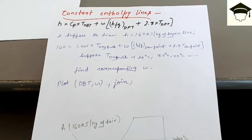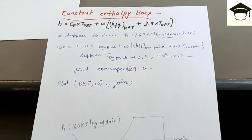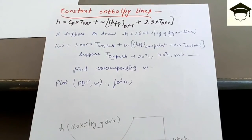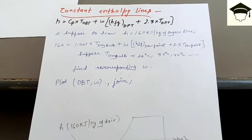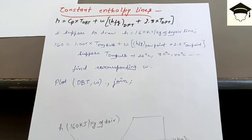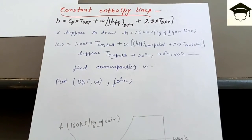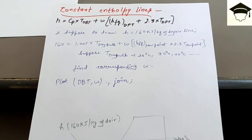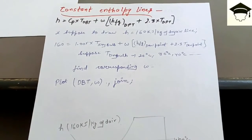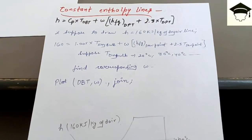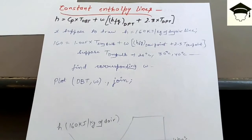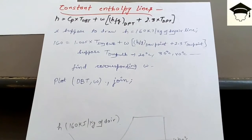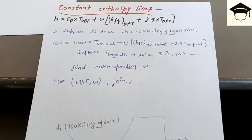All the links are given in the description at the end. If you want to see how to construct relative humidity lines, saturation lines, constant specific volume lines, and so on, you can check those videos — all the links are given in the description at the beginning. I have not made the entire construction of the psychrometric chart in this video; I have made it separately, point by point, so you can find construction of constant relative humidity line, constant saturation line, and constant specific volume line.